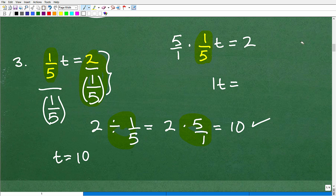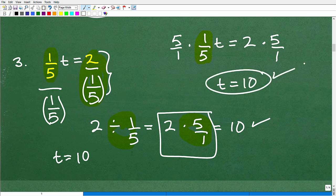But remember, in algebra, whatever you do to one side of the equation, you have to do to the other side. So this is 5 over 1. And this brings us to where we're at right here, okay? But you can see 5 over 1 or 5 times 1/5 t is 1 t or just t. And then 2 times 5 over 1 or 2 times 5 is, of course, 10. And there you go.